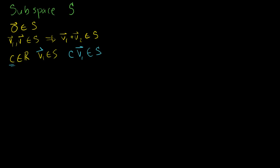Now let's see if we can do something interesting with what we understand about matrix-vector multiplication. Let's say I have the matrix A — it's an m by n matrix. And I'm interested in the following situation: I want to set up the homogeneous equation. So let's set up the equation: matrix A times vector x is equal to the zero vector.